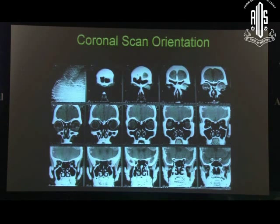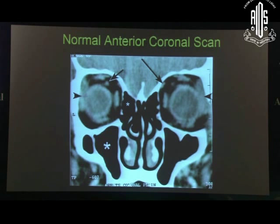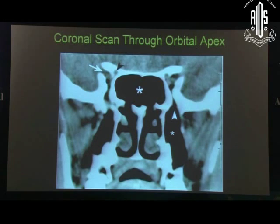If you look at the coronal scans, it is exactly the same. The parallel lines in the scout film indicate the area that has been imaged, and coronal scans are arranged from anterior to posterior. In the normal anterior coronal scan you see the ethmoidal sinus, maxillary sinus, lacrimal gland, lateral rectus, medial rectus, inferior rectus, superior rectus, and the superior ophthalmic vein. In the posterior coronal scan you see the inferior orbital fissure, all four recti separately, and the terminal portion of the superior ophthalmic vein.